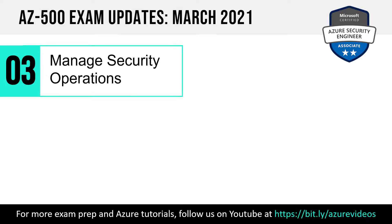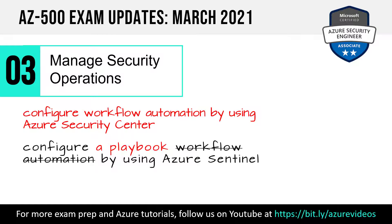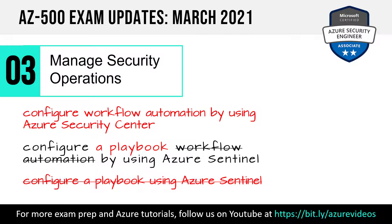And in Domain 3, Manage Security Operations, we really saw effectively one change that looks like three, so let me explain. We have a new skill measured: Configure Workflow Automation by using Azure Security Center. Frankly, this used to be in the exam last fall, pre-November, so this more or less came back. And then we saw a wording change: Configuring Workflow Automation changed to Configuring a Playbook using Azure Sentinel, and then Configure a Playbook using Sentinel in another section was just dropped and moved up. So really, not a lot of change there.